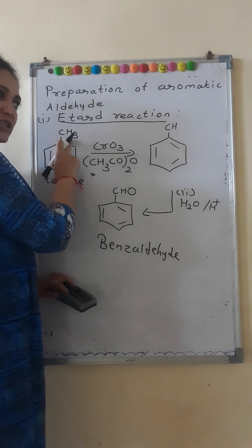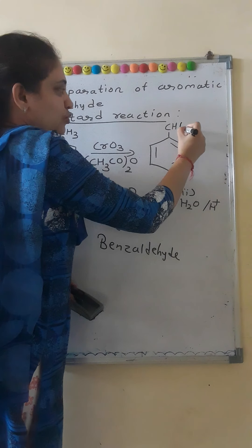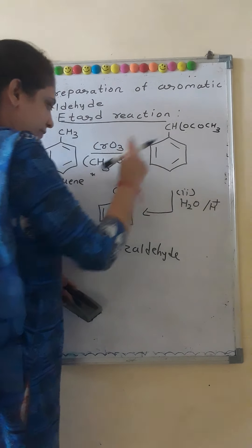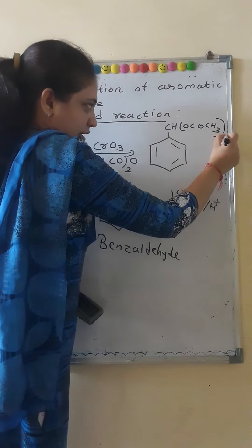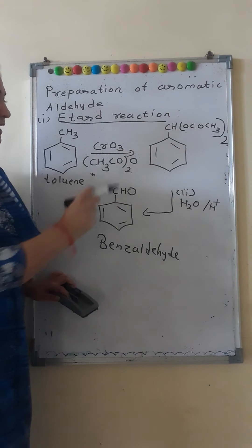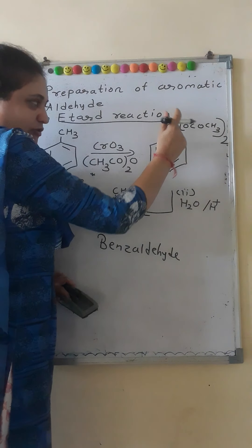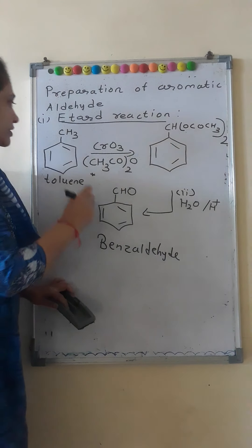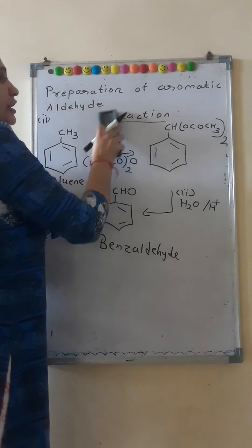This reagent gets added to toluene in a similar manner. Two hydrogens are replaced by two OCOCH₃ groups, written outside the bracket twice. Then, on hydrolysis, the oxygen from the adduct bonds to carbon, so we get benzaldehyde. This is the second method and there is no name for it.